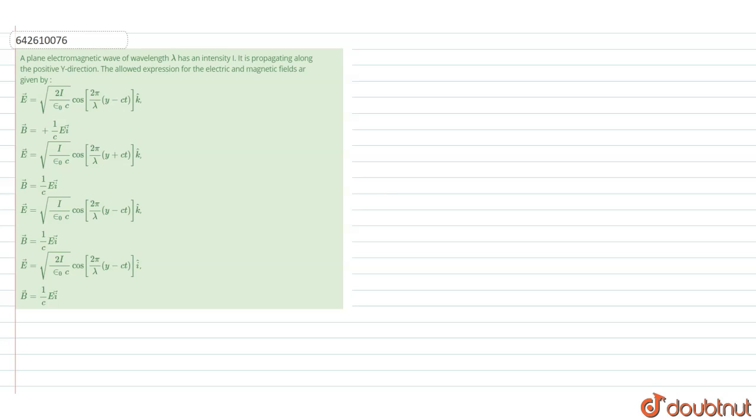Hello students, we have a question. A plane electromagnetic wave of wavelength lambda has an intensity i. It is propagating along the positive y direction. The allowed expressions for the electric and magnetic field are given.